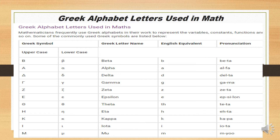Alpha — equivalent to letter A, pronunciation: alpha. Delta — uppercase and lowercase delta, English equivalent lowercase d, pronunciation: delta. Gamma — English equivalent lowercase g, pronunciation: gamma.